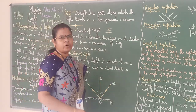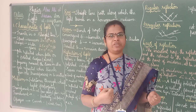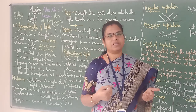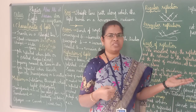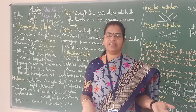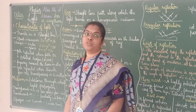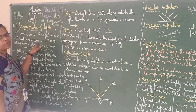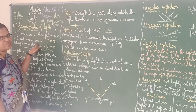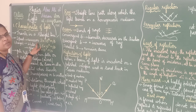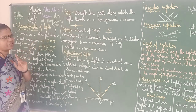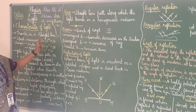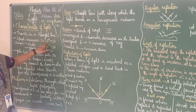The speed of light — we have three things to study. In vacuum, the speed of light is 3 × 10⁸ metres per second. This is very important because when you are doing numerical problems it will be helpful. In water, it is 2.5 × 10⁸ metres per second. In glass, the speed of light is 2 × 10⁸ metres per second.